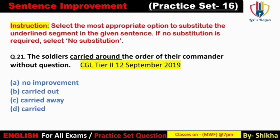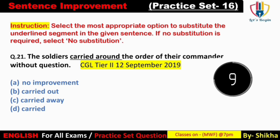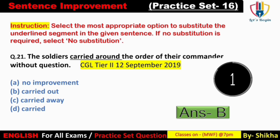Next: 'The soldiers carried around the order of their commander without question.' 'Carry around' ka matlab hota hai kisi cheez ko physically carry karna — bahut saari jagahon mein le jaana. Option C 'carried away' — ka matlab hota hai kisi cheez ko kahi se remove kar dena. Option D 'carried' — simply carry karna. Correct answer option B: 'carried out' — 'carry out' ka matlab hota hai paalan karna, kisi ko obey karna. Toh soldiers ne apne commander ke order ka paalan kiya without any question. Answer: option B.